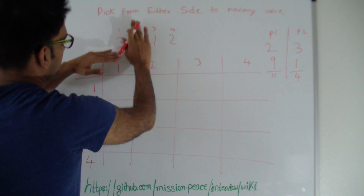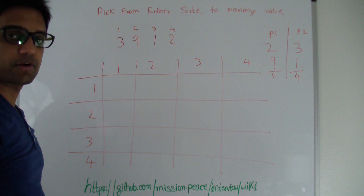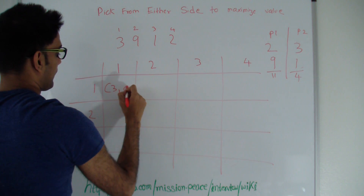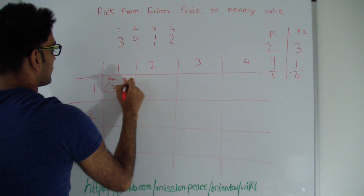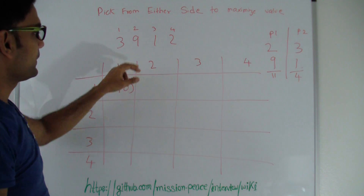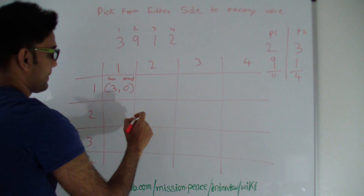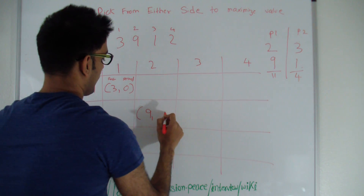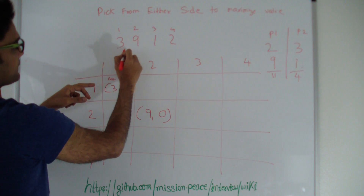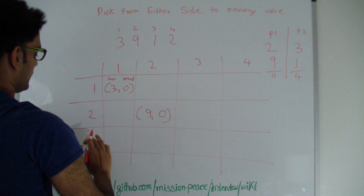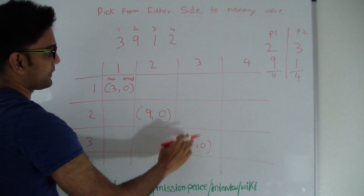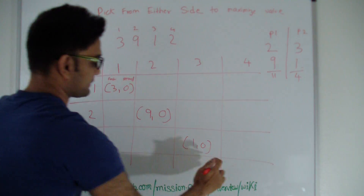If you just had 1 item — say 3 — and player 1 was picking, how much value would he get? 3. And if player 2 was picking with only 3 available, he would get 0. So this is our first and second. If I just had 9 and nothing else, the first player picking gets 9 and player 2 gets 0. We fill the matrix diagonally: 1,1 for the first item; 2,2 for the second; 3,3 is first=1, second=0; 4,4 is first=2, second=0.